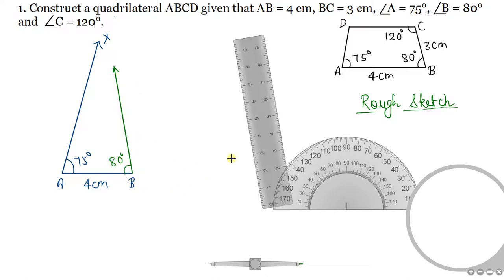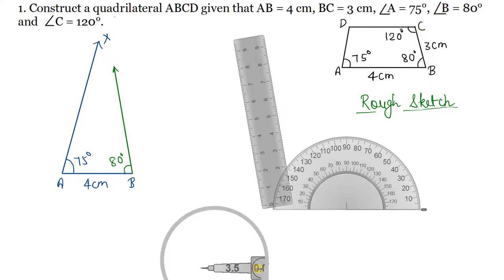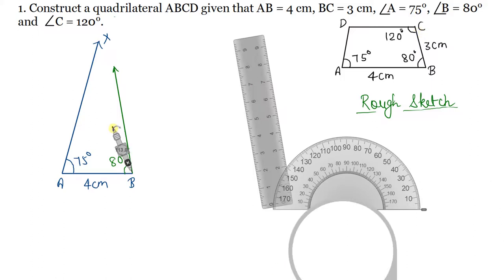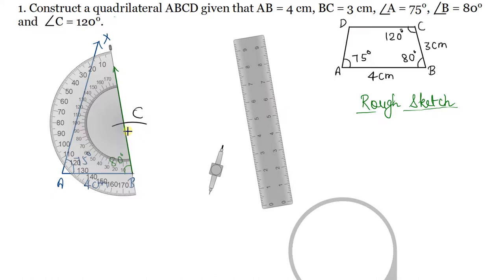Now at point B, taking a radius of 3 cm, we draw an arc. This arc will intersect the ray at one point, and that point will be C. The point of intersection is your point C, so we will mark C here.